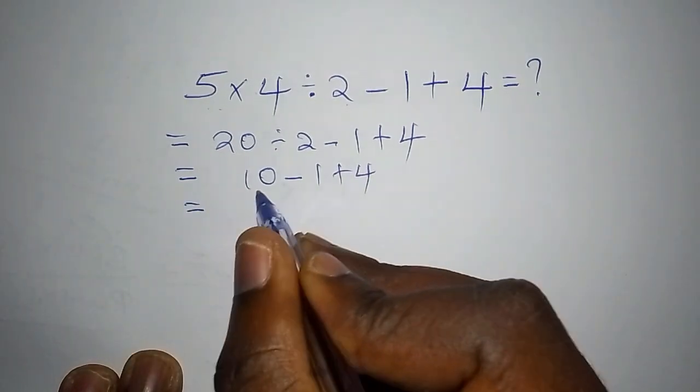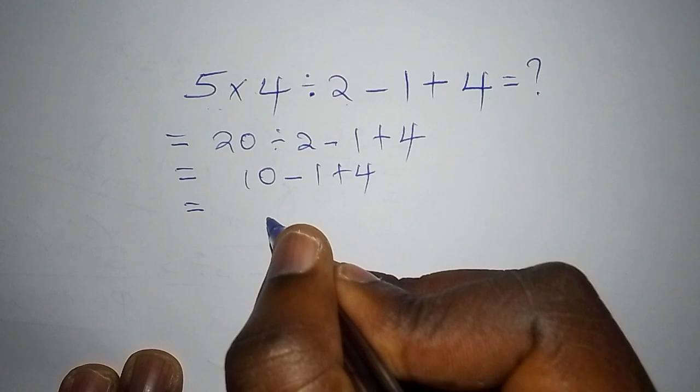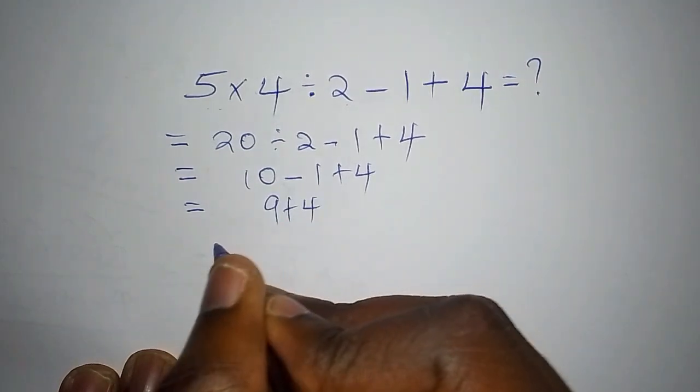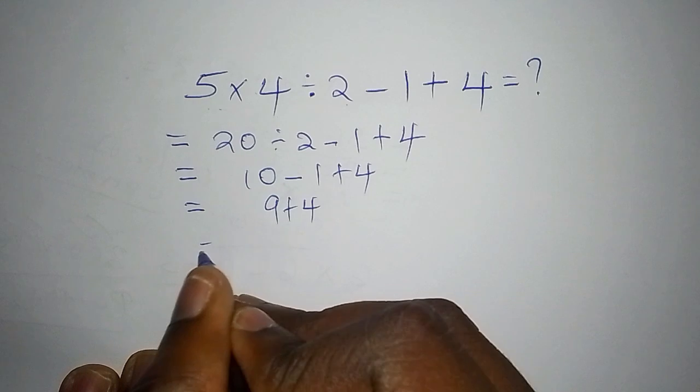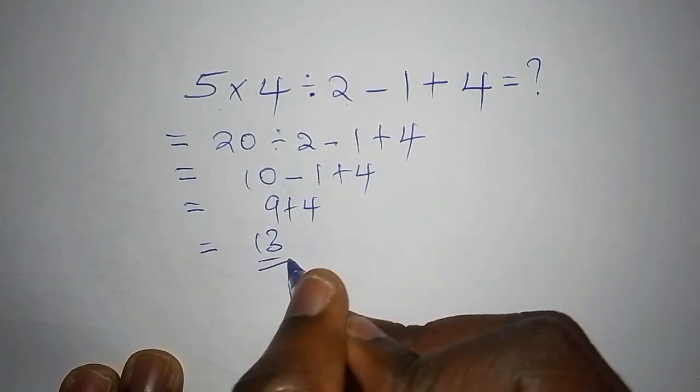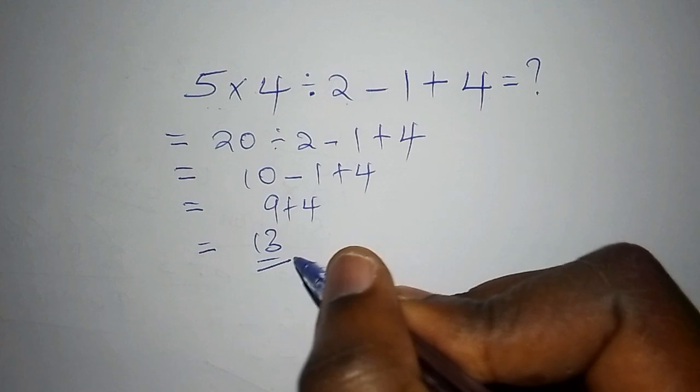Then from there, they say that 10 subtract from 1 is 9, then 9 add to 4. And their answer now becomes 9 add to 4. Their answer now becomes 13, and then they say this is the correct answer.